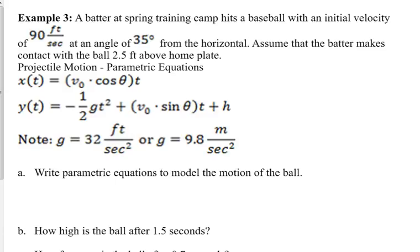Then it's got t squared, so the vertical component is quadratic. We've got the initial velocity again, sine of the angle, t, and then this plus h on the end is if there's an initial height. It may start on the ground, then you wouldn't have a plus h. This one does. This one is 2.5 feet above home plate, so that would be the h, just 2.5.